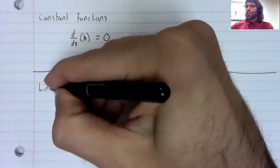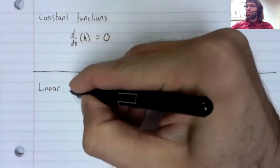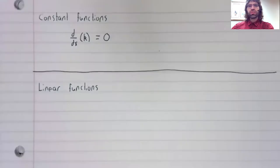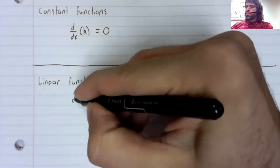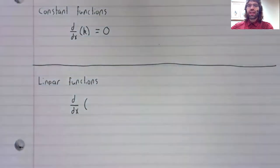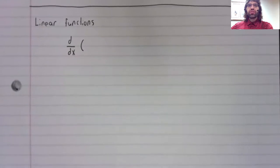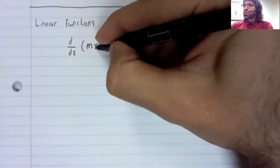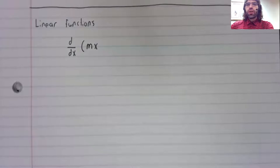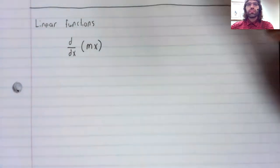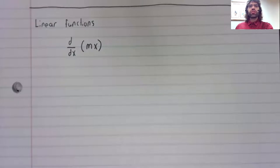Now we're going to learn to take the derivatives of linear functions. Although actually, we're going to learn to do something a little weaker than that. A linear function, as you would have learned it in algebra, has the form mx plus b. We're going to ignore the plus b part of that and learn to differentiate functions of the form m times x.